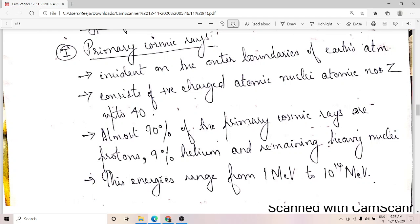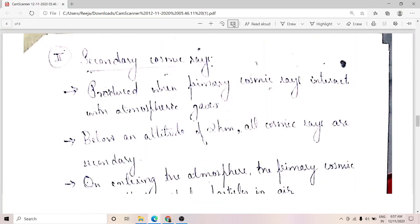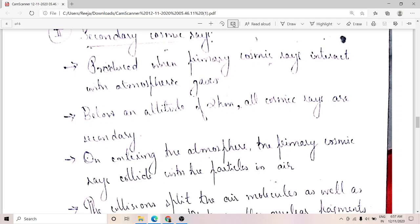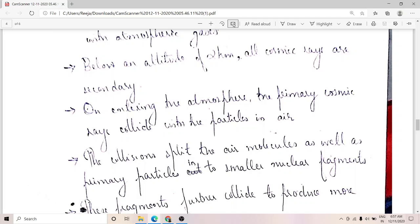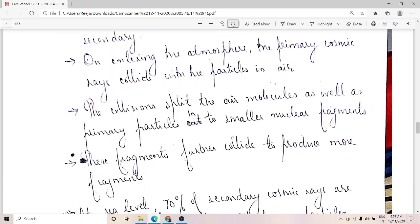Secondary cosmic rays are produced when primary cosmic rays interact with atmospheric gases. Below an altitude of 2 km, all the cosmic rays are secondary. On entering the earth's atmosphere, the primary cosmic rays collide with the particles or molecules in the air and are broken down into smaller fragments. They themselves split into smaller fragments and also split the air molecules, and thus secondary cosmic rays are formed.